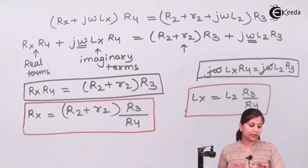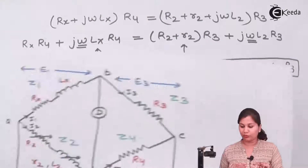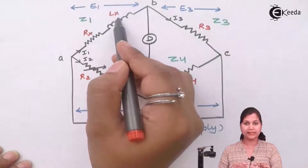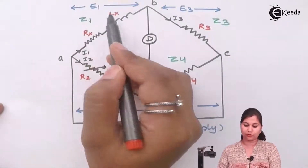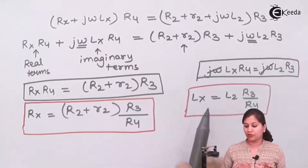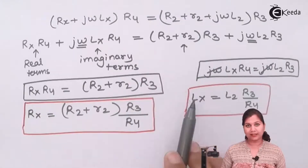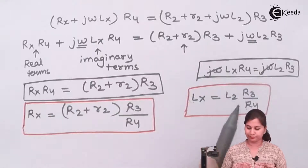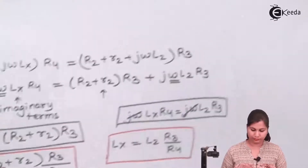You can see that in the circuit diagram, we wanted to find out Z1, the unknown impedance, which is Rx plus Lx. We have found out the value of Rx and Lx. This unknown inductance can be calculated by comparing it with the known inductance L2. This is how we can use the Maxwell inductance bridge for the measurement of self-inductance by comparing it with the known inductance.